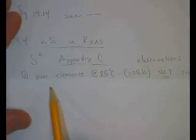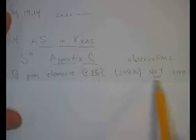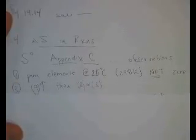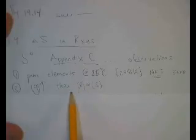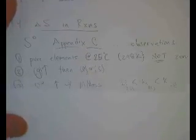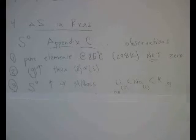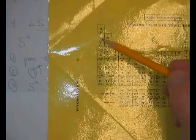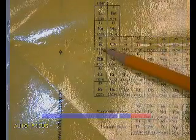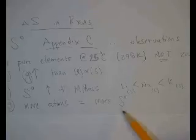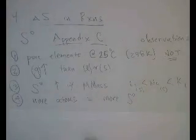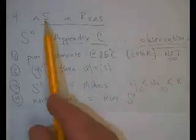Some observations from Appendix C: First, pure elements at 25 degrees Celsius (298 K) have a non-zero entropy. Second, gases have greater entropy than liquids or solids — the standard entropies of gases are greater, which makes sense. Third, entropy increases with molar mass — generally the bigger they are, the more microstates their atoms can exist in. For example, lithium would have less entropy than sodium, than potassium, going down the alkali metals group.